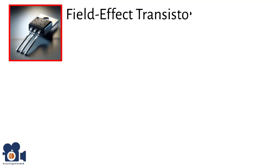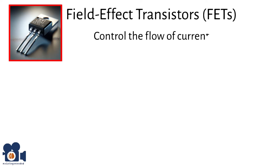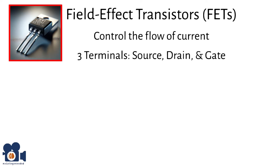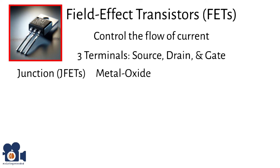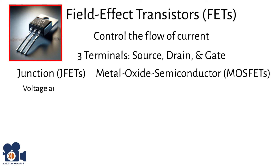Field effect transistors (FETs) control the flow of current using an electric field and have three terminals: source, drain, and gate. The gate voltage controls the current flow between the source and the drain. There are two main types of FETs: junction FETs (JFETs) and metal oxide semiconductor FETs (MOSFETs). In JFETs, the voltage applied to the gate controls the current flow through the channel, and they are used in low-noise amplifiers for sensitive electronic equipment like radio receivers.